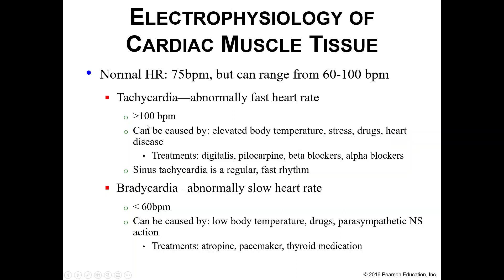This is not something we want to continue regularly. Elevated body temperature is easy to deal with, but some causes are harder. Medications are not something we want ongoing. On the flip side, bradycardia is an abnormally slow heart rate — anything below 60 beats per minute. Causes include lower body temperature, when everything in the body slows to conserve heat, certain drugs, and your parasympathetic nervous system, whose job is literally rest and digest, slowing that heart rate down.